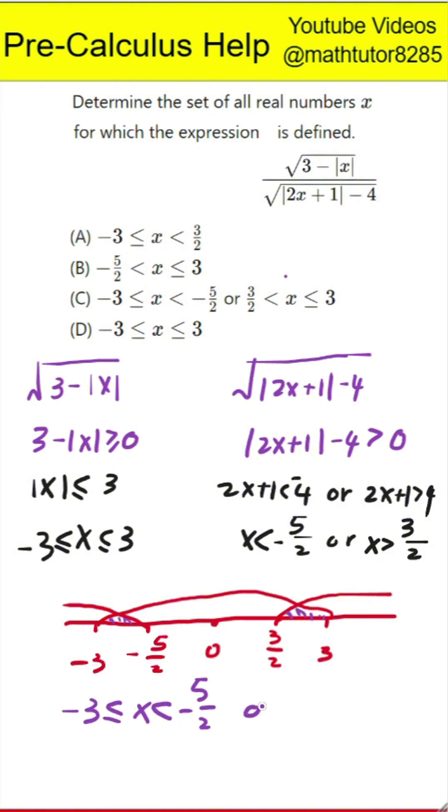x is between negative 3 and negative 2.5, not including negative 2.5, or x is between 1.5 and 3, not including 1.5 but including 3. The correct answer is option C.